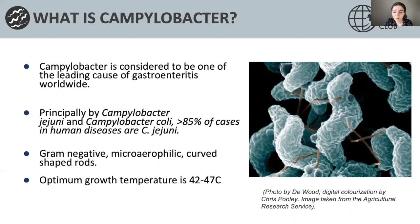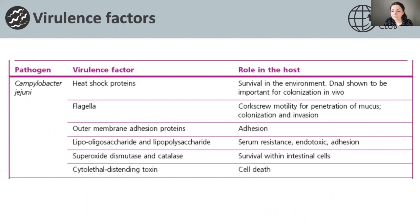Campylobacter has an optimum growth temperature of around 42 to 47 degrees Celsius. Without going into too much detail, this table shows some of the virulence factors of Campylobacter. Pathogenic isolates of Campylobacter jejuni show several virulence attributes, including motility, chemotaxis, and temperature stress response, and they're all important pathogenetic factors. This is evidenced by mutants which lack these characteristics being unable to colonize the intestines of chickens.